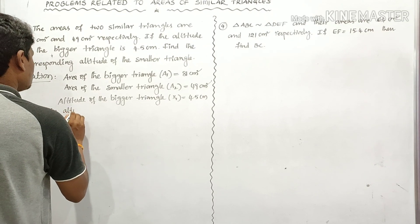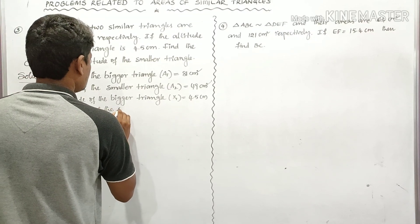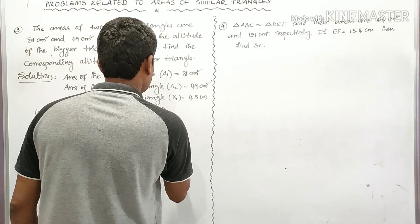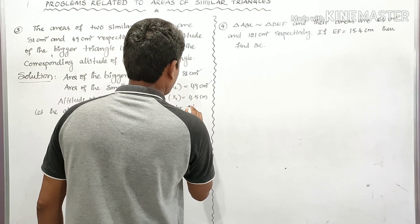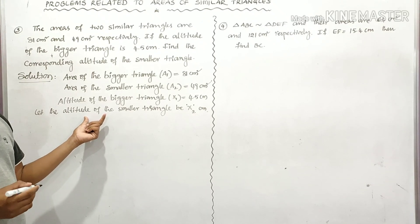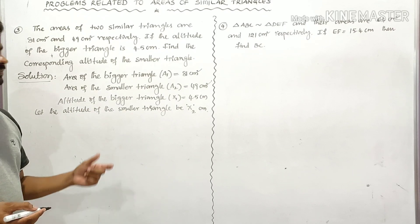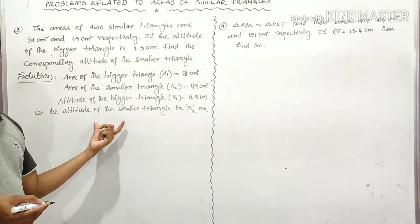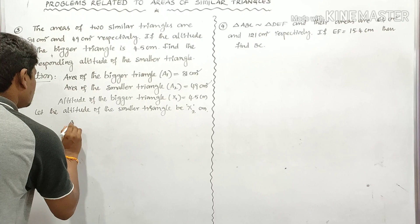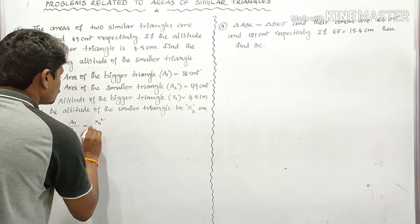Let the altitude of the smaller triangle be X2 centimeters. This is related to the third statement of areas of similar triangles: the ratio of the areas of two similar triangles is equal to the ratio of the squares of their altitudes. So we can write A1 / A2 = X1² / X2².